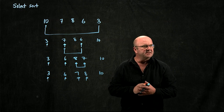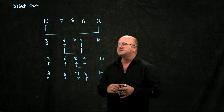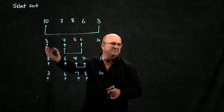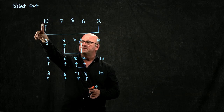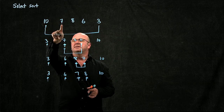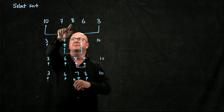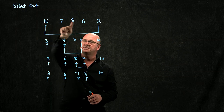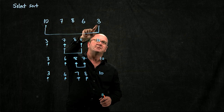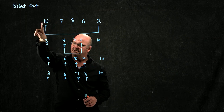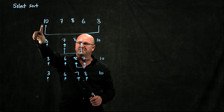What's the complexity of that sort? Let's think about how many comparisons we do. In the first case, we're at position 0. We've got to compare the second thing with our element at position 0, the third thing, the fourth thing, and the fifth thing with our element at position 0. So in the first case, we have to do n-1 comparisons.